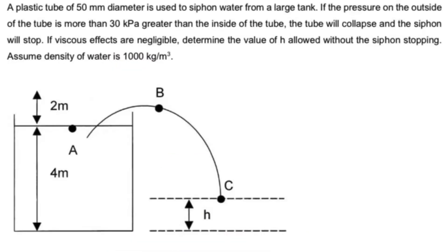Looking at this example here, we are told a plastic tube of 50 mm diameter is used to siphon water from a large tank. If the pressure on the outside of the tube is more than 30 kPa greater than the inside of the tube, the tube will collapse and the siphon will stop. If the viscous effects are negligible, determine the value of H, which is the height, without siphon stopping, using the density of water to be 1000 kg per m³.